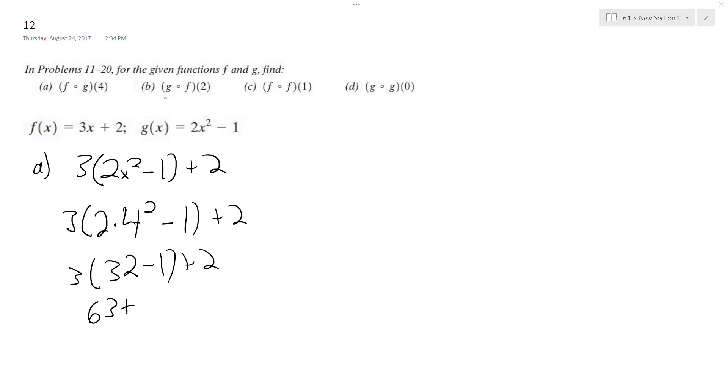Oh, I made a mistake. 32 minus 1 is 31, but times 3 is 93, so it's 93 plus 2 is 95. That's for part A.